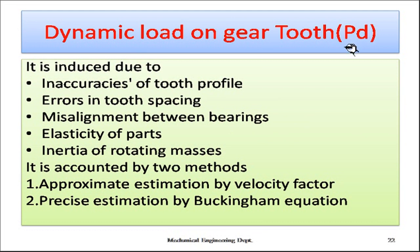Now let's examine dynamic load on the gear tooth. Dynamic load, denoted as PD, is introduced due to inaccuracy of the tooth profile, tooth spacing errors, bearing misalignment, elasticity of parts and elastic deflections, and the inertia of rotating masses. This dynamic load effect can be accounted for by two methods: approximate estimation by velocity factor, and precise estimation by Buckingham equation.